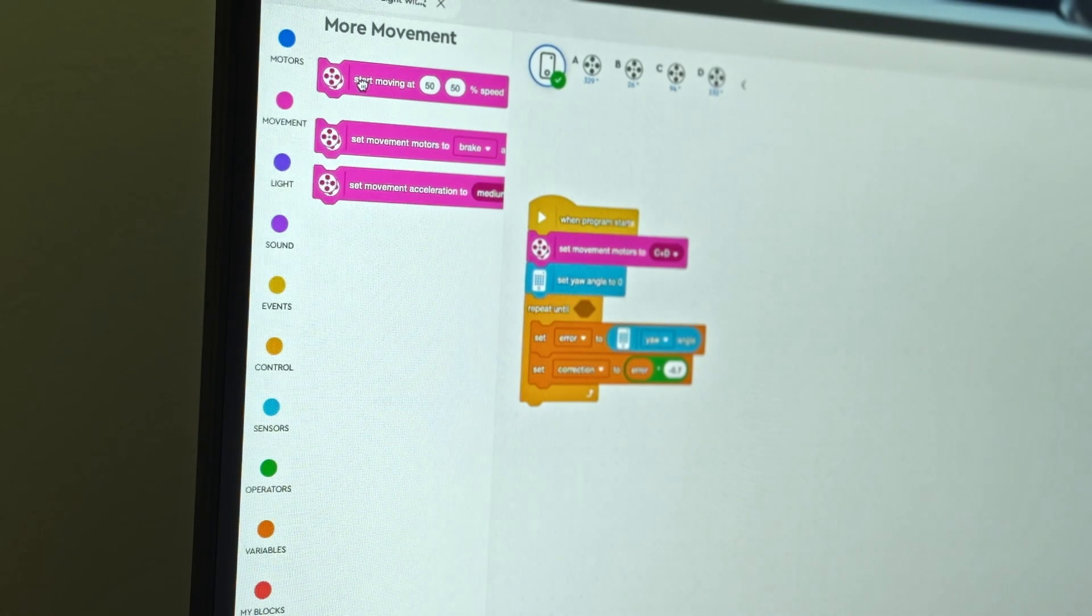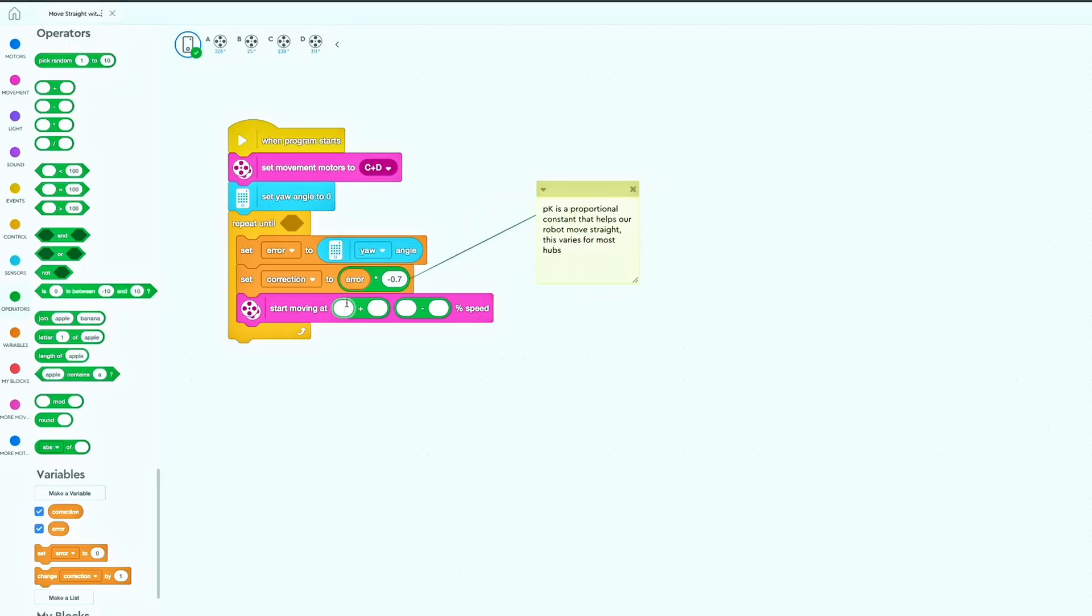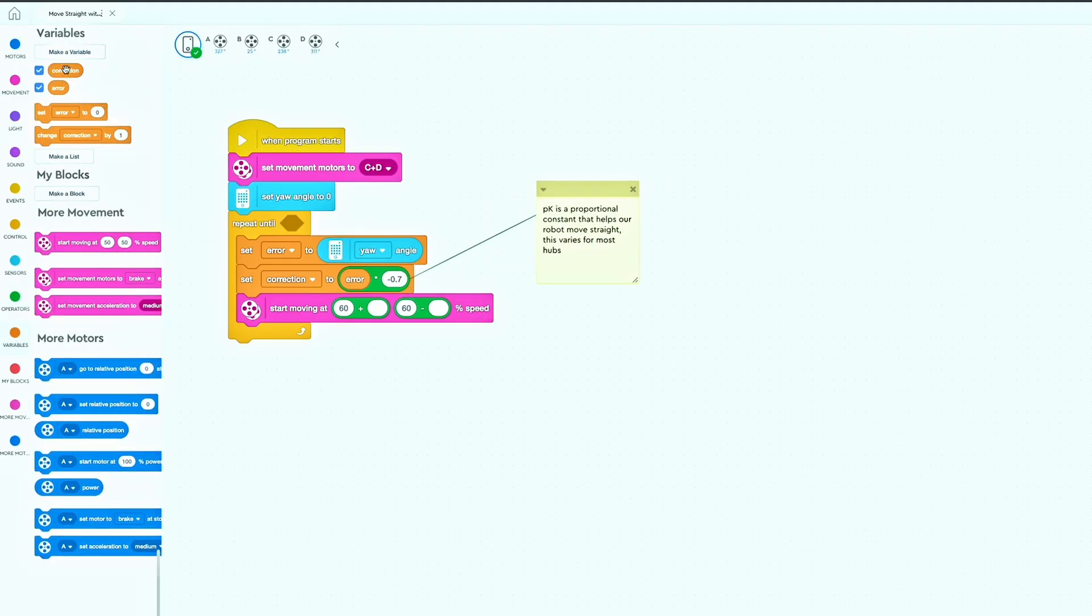Step number seven, here we'll go back to the top of the repeat until block, and here we'll make a condition for when this loop will be exited. For me, I want my robot to move forward one thousand degrees. Here's how I'm going to achieve that.